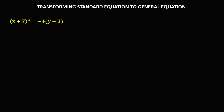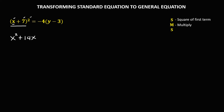For this second given, again for the square of the binomial, using SMS: first S is the square of the first term, so the square of X — that's X squared. Then multiply: 2 times 7 — that's 14, then times X — that's positive 14X. And the square of the last term, so the square of 7 — that's 49.